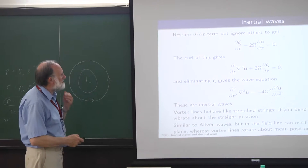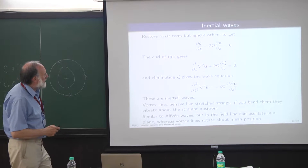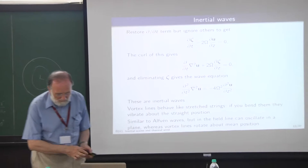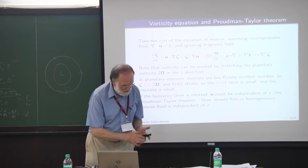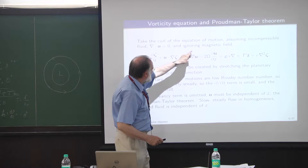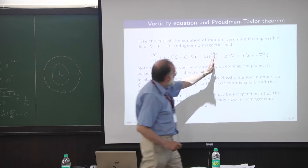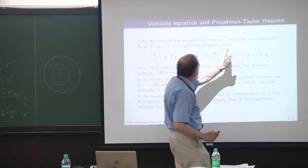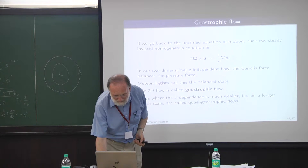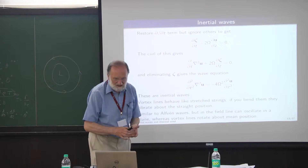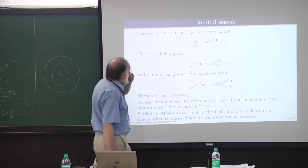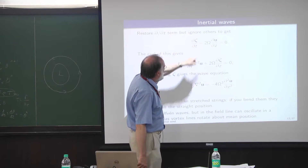The first thing I'll do is restore the d/dt term. In the vorticity equation, I'm keeping the time derivative but dropping the nonlinear terms. So we're keeping two terms and allowing the vorticity to be time-dependent. If you take the curl of this equation, you get a formula for the curl of the vorticity.